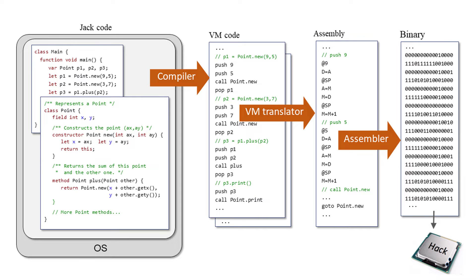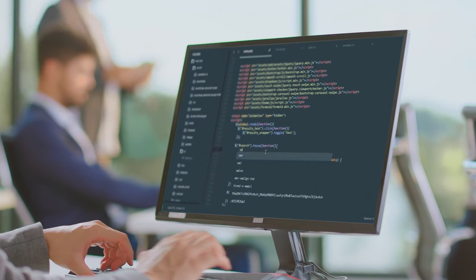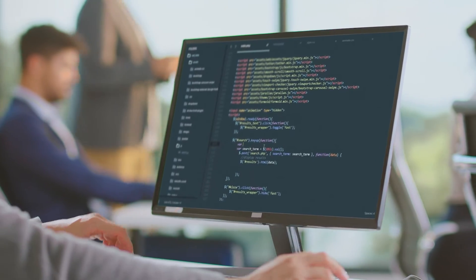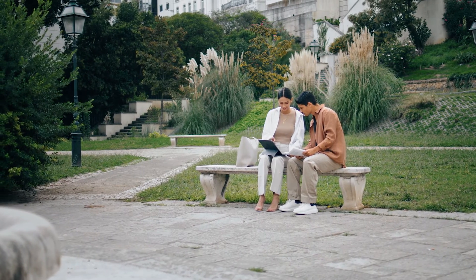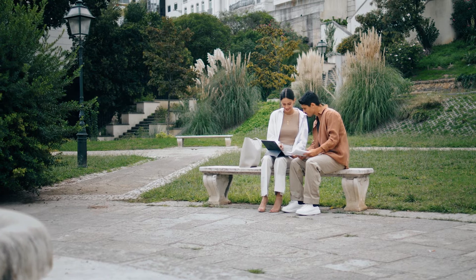In the second part of the course, students take this hardware platform and build on top of it a software hierarchy consisting of an assembler, a virtual machine, a compiler, and a simple operating system. For this part of the course, students need to know programming at the level of Introduction to Computer Science.